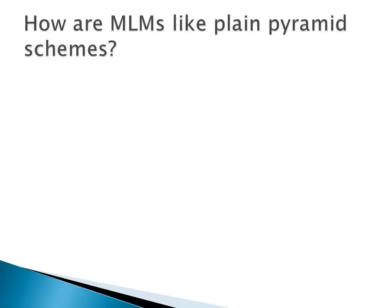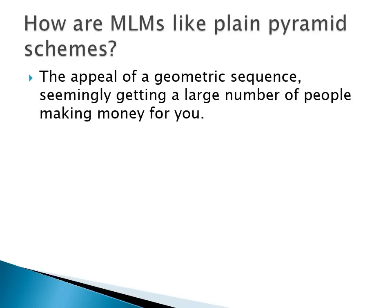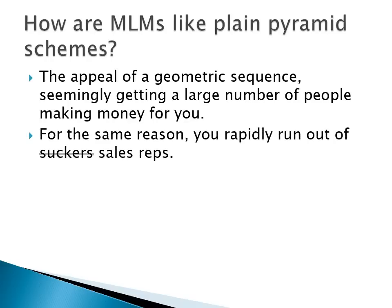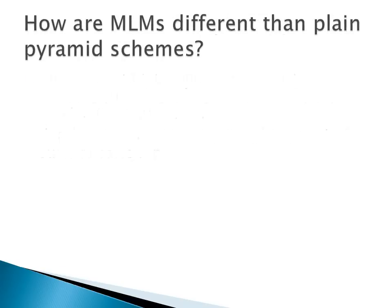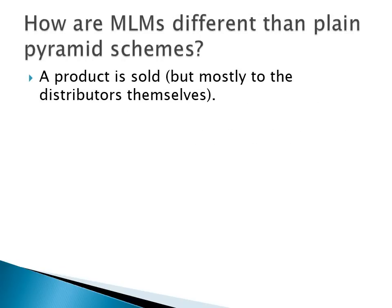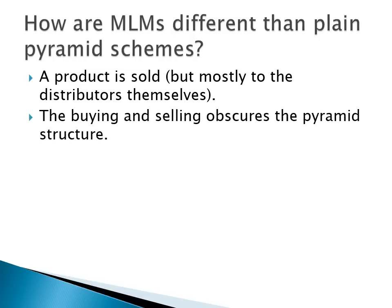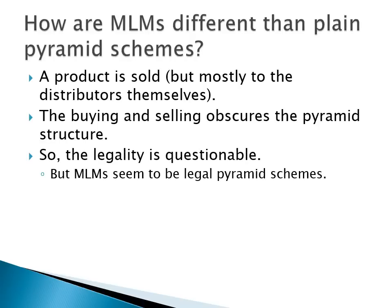How are multi-level marketing schemes like plain cash-only pyramid schemes? The math is similar — both have the appeal of a geometric sequence seemingly getting a large number of people making money for you, but for the same reason you rapidly run out of sales representatives. The big difference is that a product is sold, although in most cases it's just sold to the distributors themselves. The buying and selling obscures the pyramid structure. Multi-level marketing seems to be legal — people running these schemes have been accused of running illegal schemes but have generally been able to hire good lawyers and get acquitted.